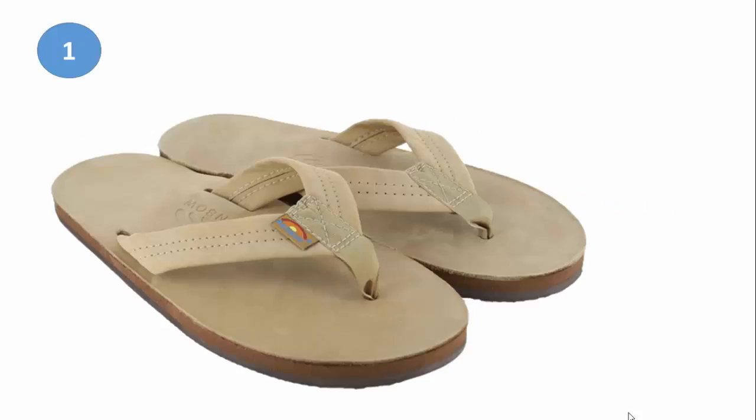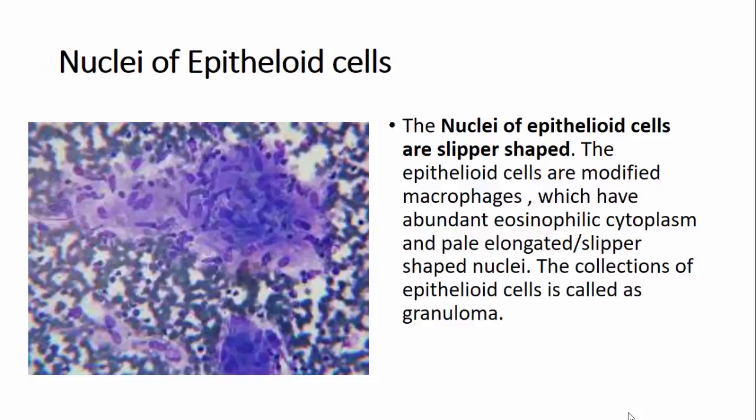The first one: as you can see, these are a pair of slippers, and we identify epithelioid cell nuclei as slipper-shaped. These are the nuclei of epithelioid cells — modified macrophages with abundant eosinophilic cytoplasm and pale staining, elongated nuclei resembling a slipper. The collection of epithelioid cells, as you all know, is a granuloma.